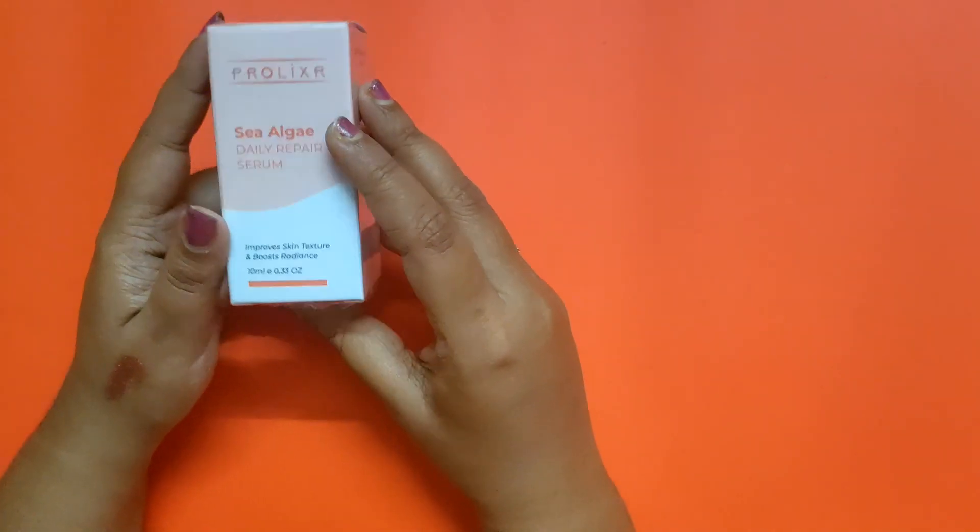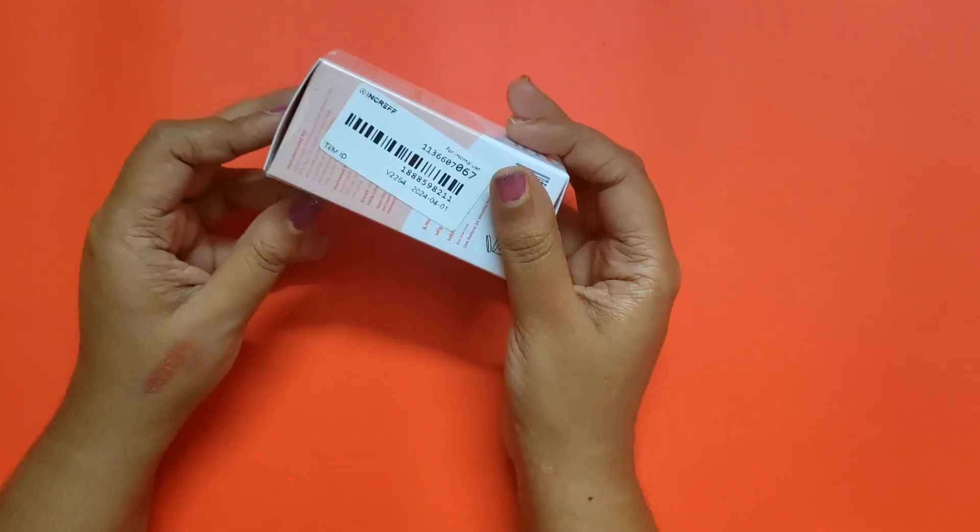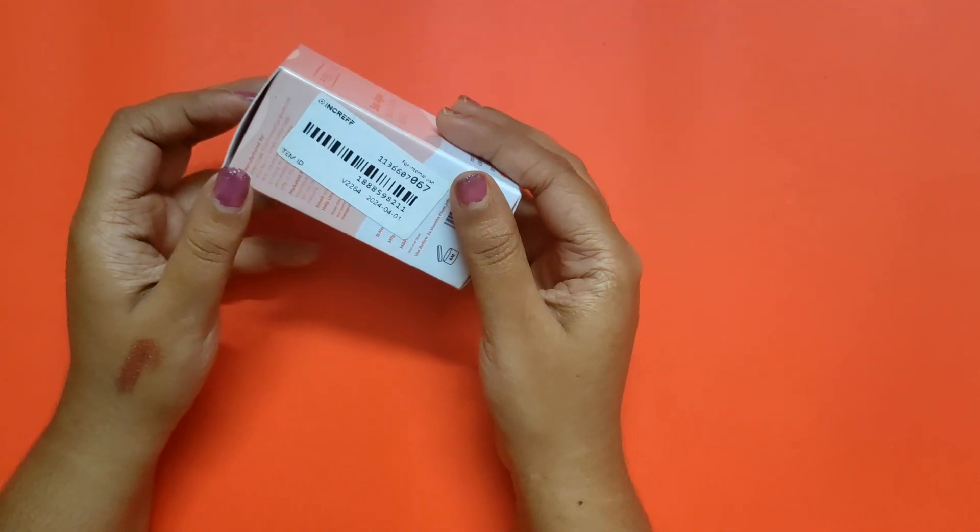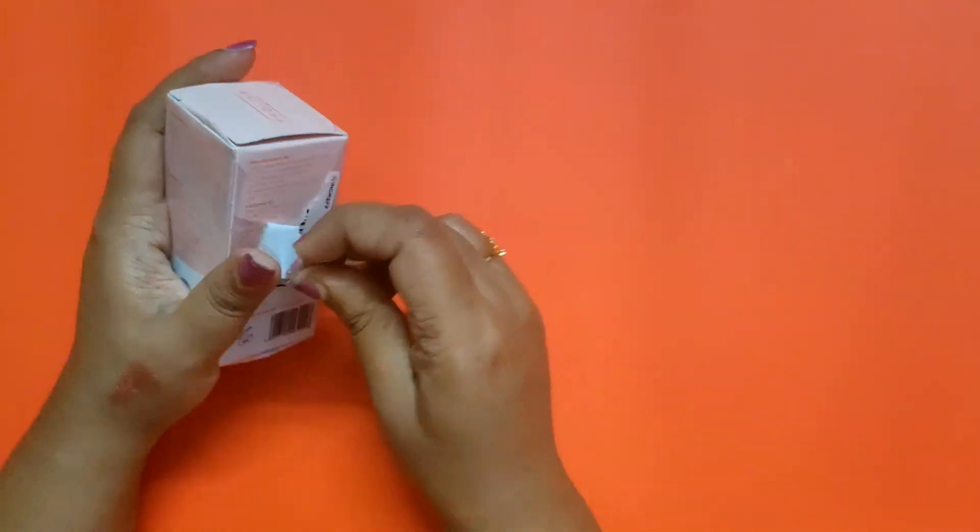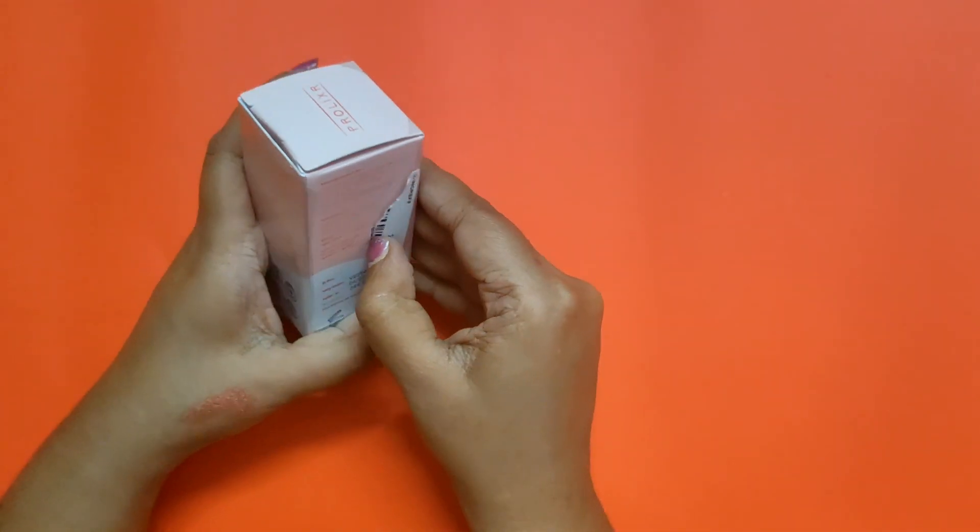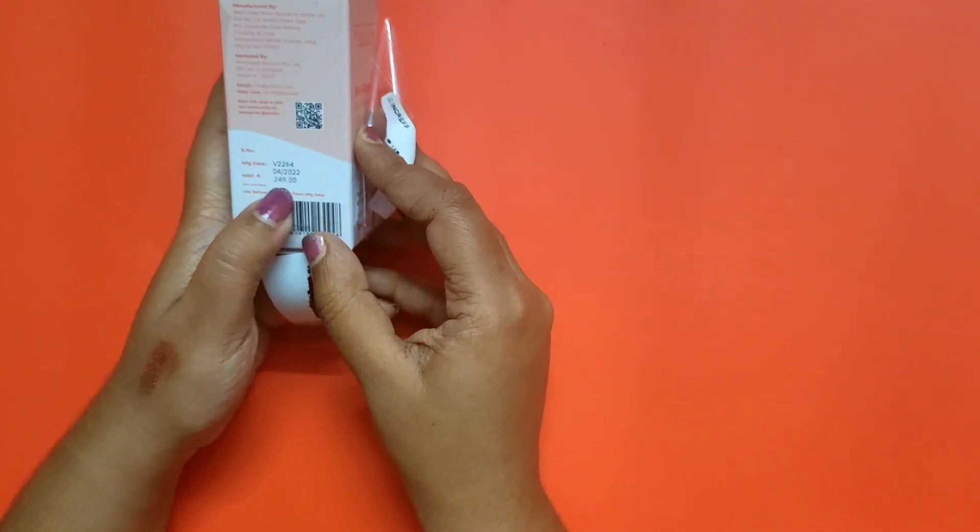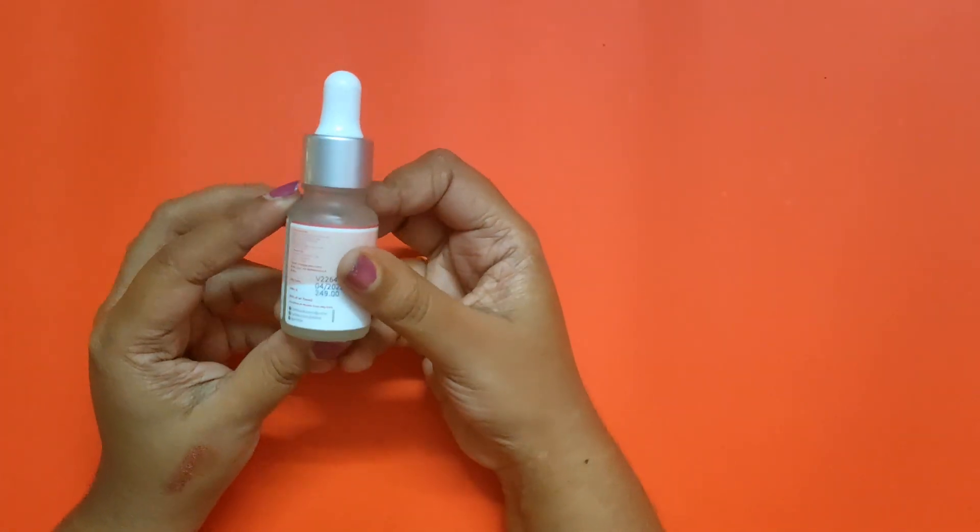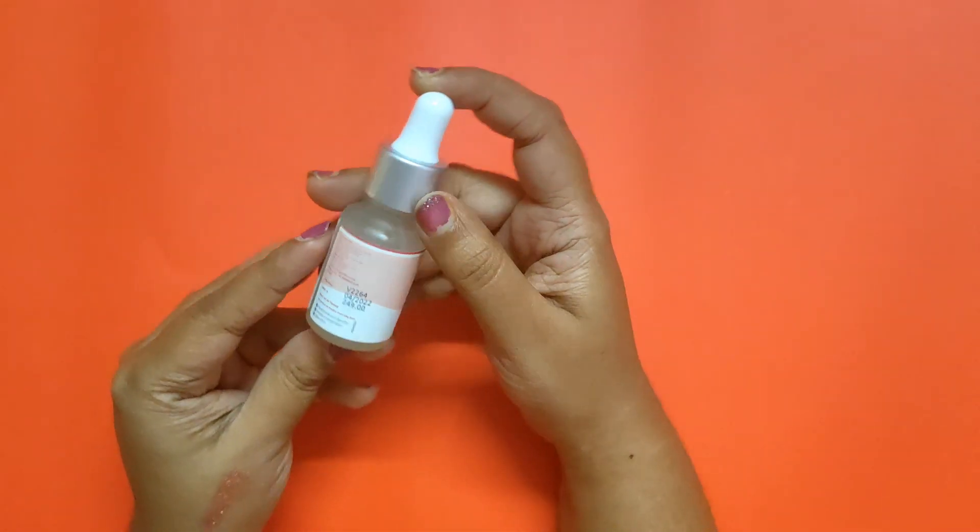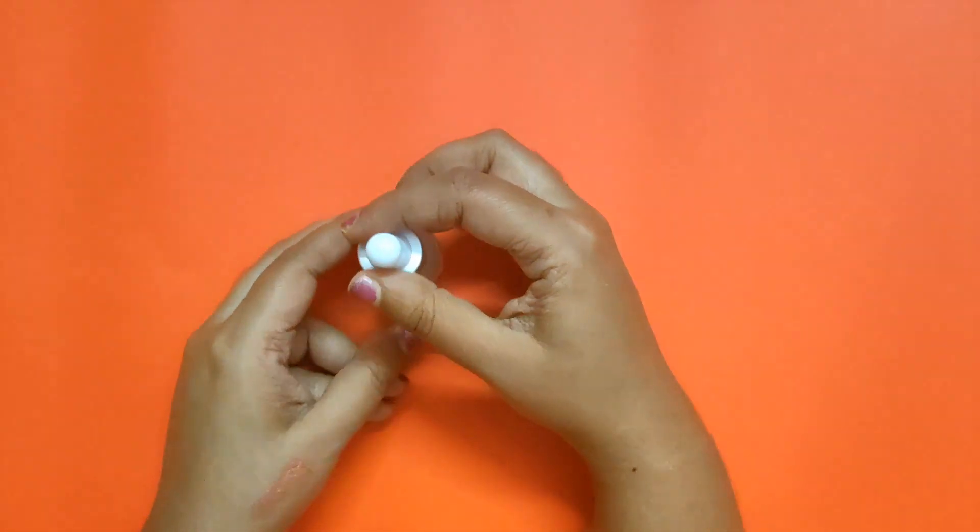It comes in this box packaging. It contains seaweed algae, aloe vera, licorice, and green tea that reduces fine lines, wrinkles, and revitalizes and tones your skin. It also has smoothing skin texture properties and moisturizes and improves your skin.